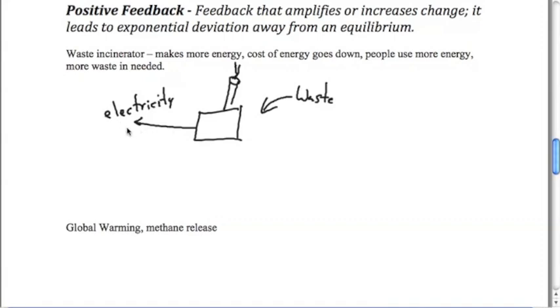The outcome is the electricity that we get. If we produce some electricity, then people are going to use more electricity. If they use more electricity, they're going to get used to a lifestyle of using more electricity. So they're going to ultimately then produce more waste in order to produce electricity. If they have more electricity, they use more electricity, which they need to produce more waste. And you can see this cycle starts to get away from equilibrium. So you have a positive feedback where you're amplifying or increasing the change.